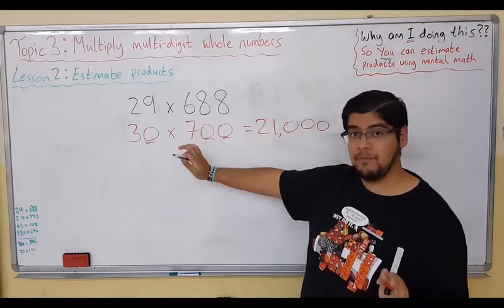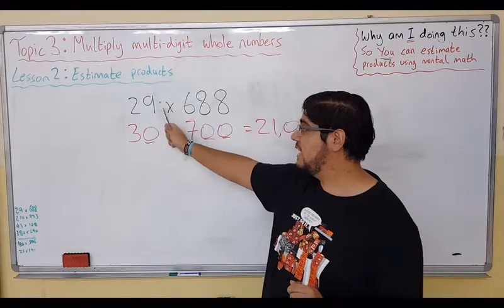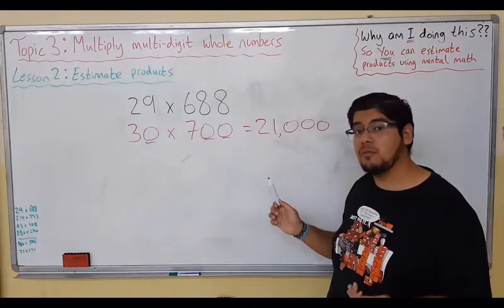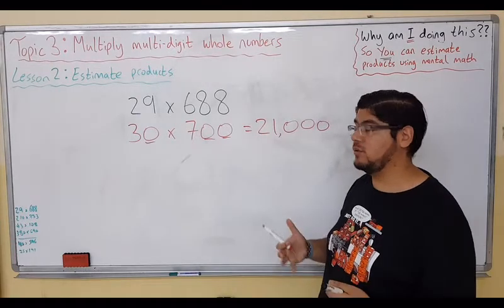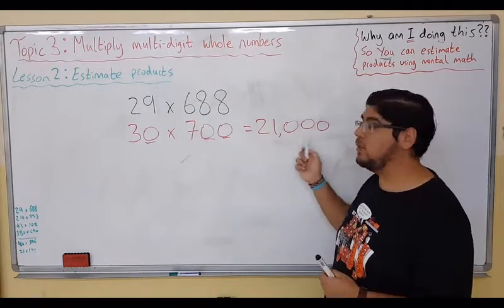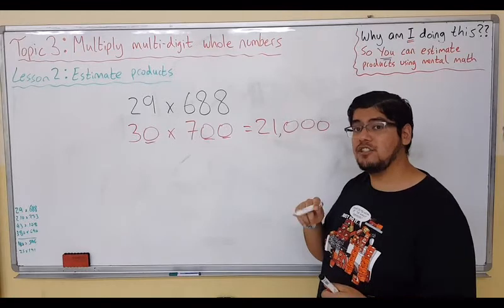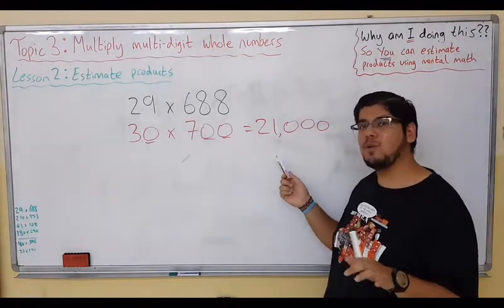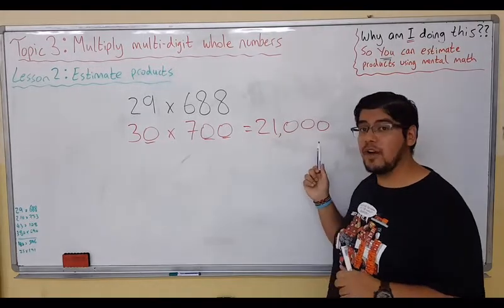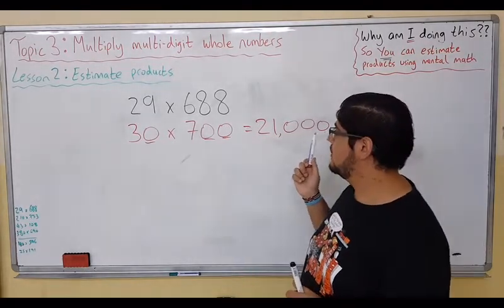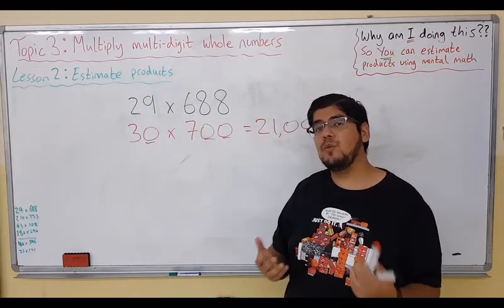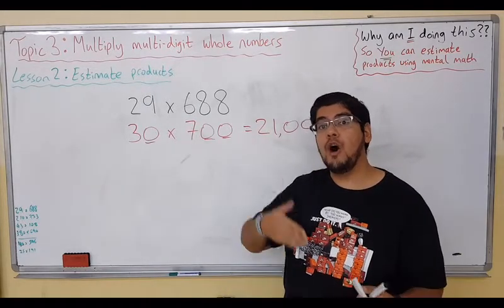We think that the answer to 29 times 688 is approximately—it's close to, it's roughly—21,000. These words I just used you'll hear a lot. So we think it's going to be somewhere near 21,000.